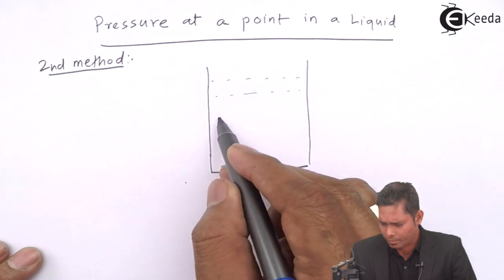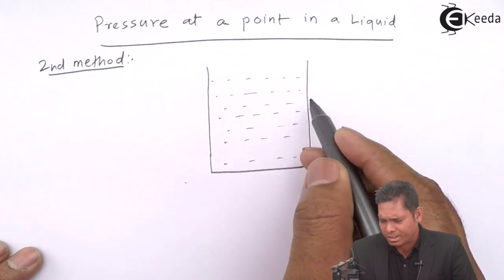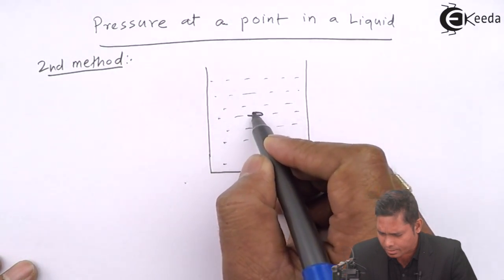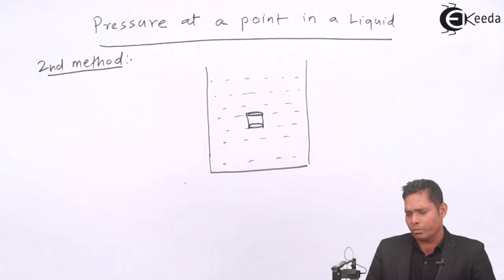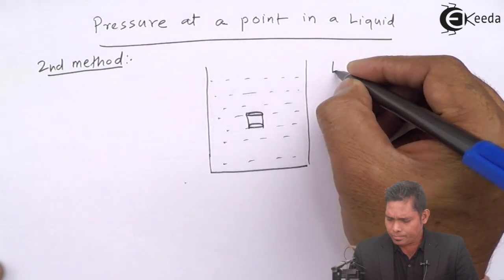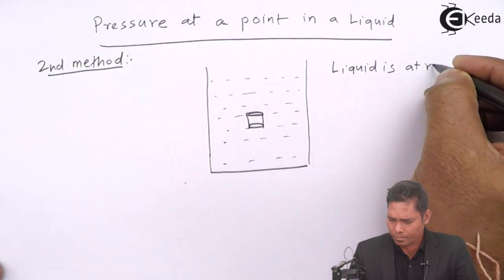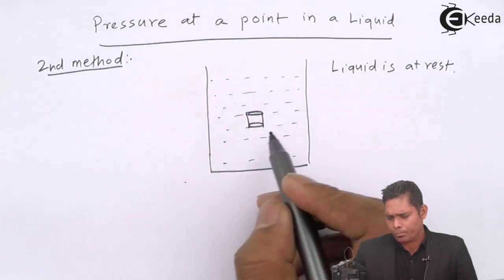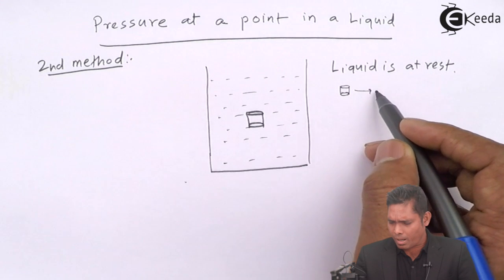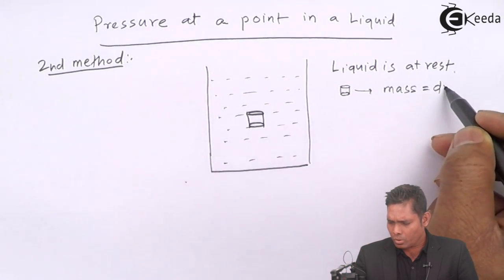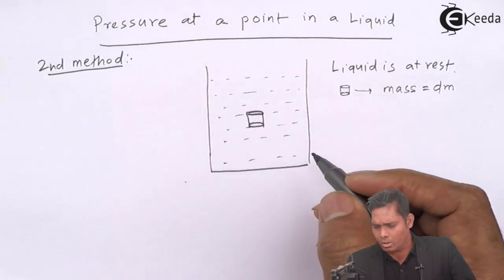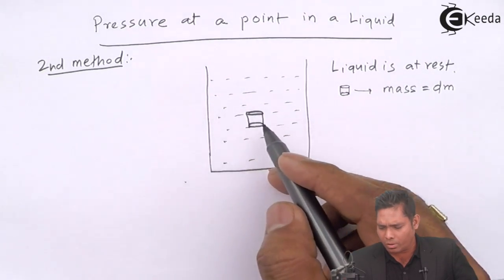Suppose I have a container which contains a liquid, and I consider a hypothetical cross section or small element of the liquid — a cylindrical element, which is a section of the liquid within it. This liquid is at rest, so this element is also at rest. I call this liquid element having mass dm — a mass element of the cylindrical portion of the liquid considered.